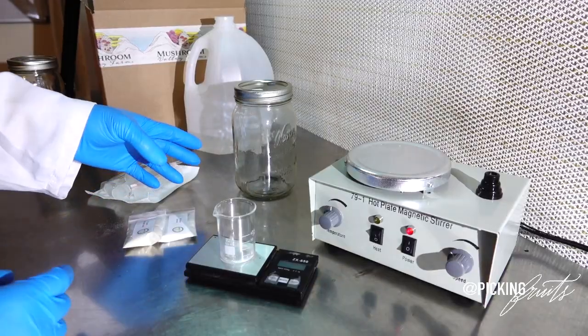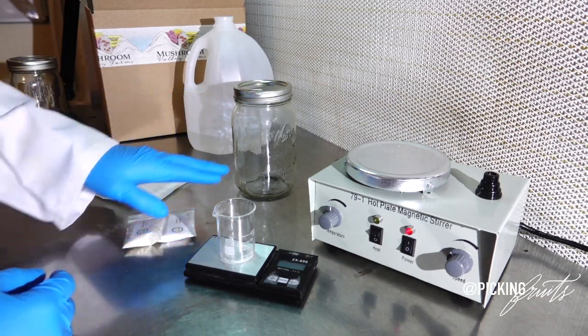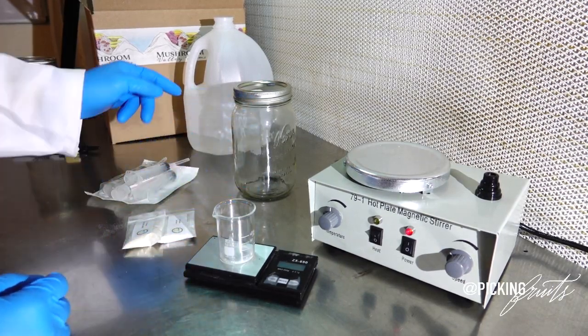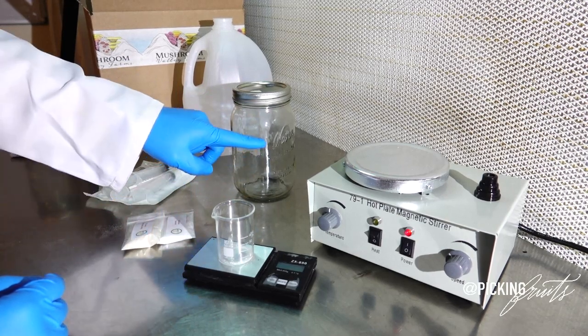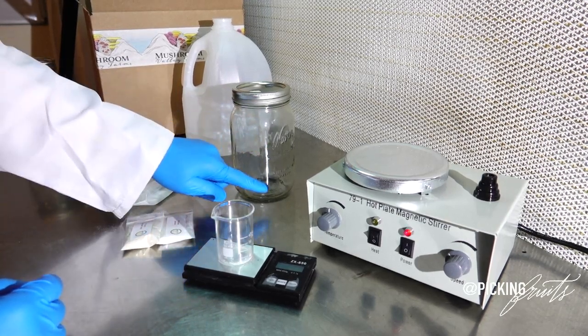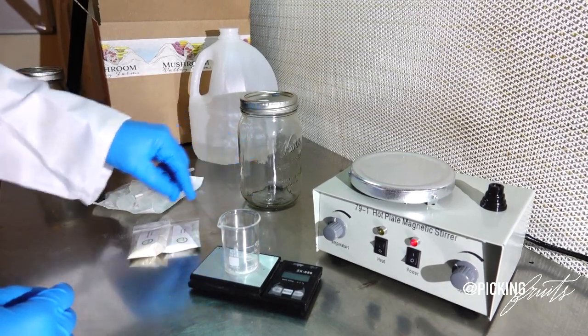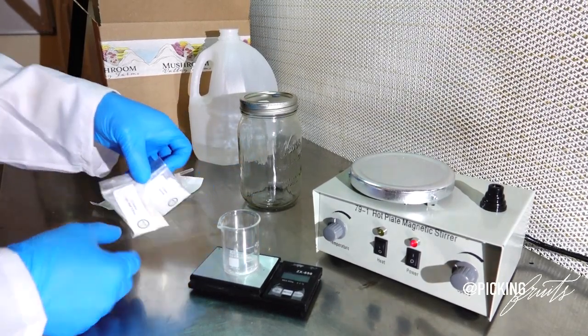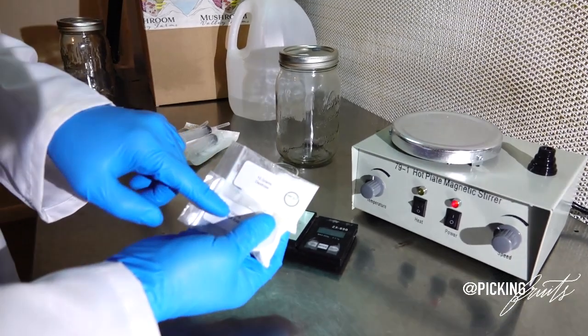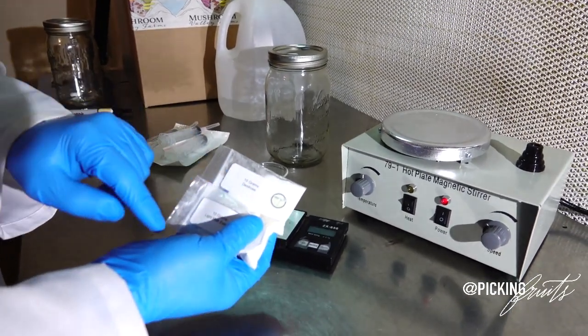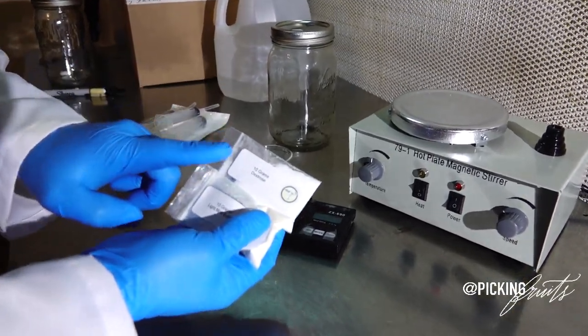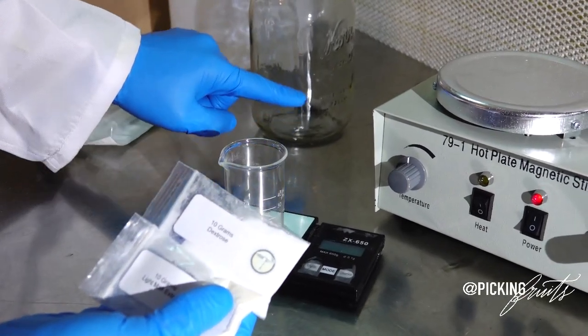Okay, so the first step to making our liquid culture is going to be determining how much liquid media we're actually trying to create. For this instance, we're going to be making 500 milliliters of liquid culture. So to do that, we're going to start off with 500 milliliters of distilled water. And we're also going to be starting off with 5 grams of a 50-50 mix. We're going to use a single gram for every single 100 milliliters of water.